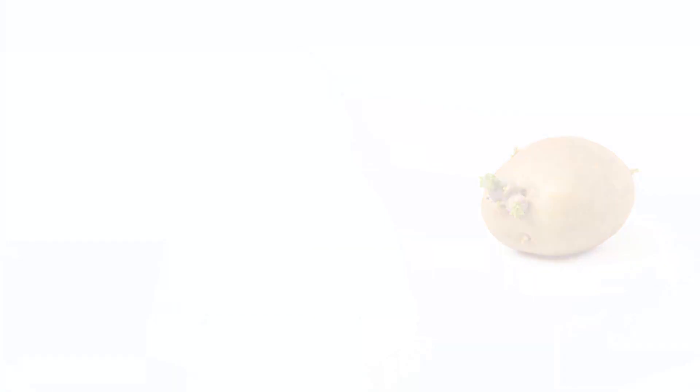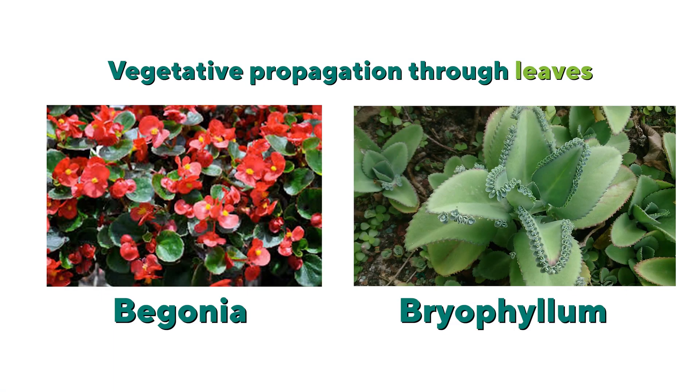If you look at a potato closely, you can see these tiny depressions that are called eyes. These are the buds. Let's look at other plants like begonia or bryophyllum. These plants also reproduce by vegetative propagation. Here, the buds are formed along the margin of the leaves. When the buds fall off to the ground, new plants grow out of them.